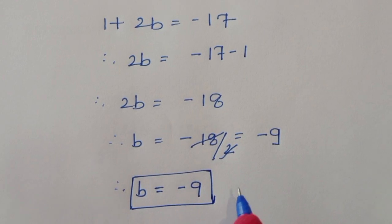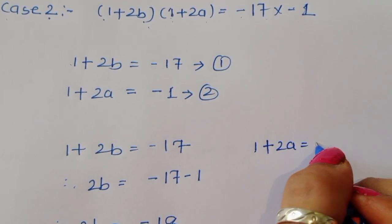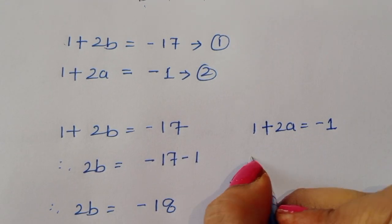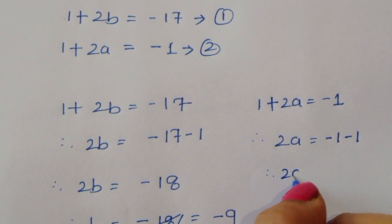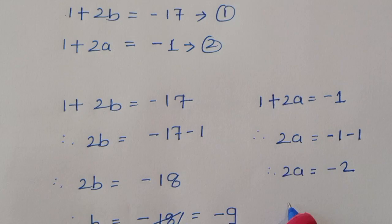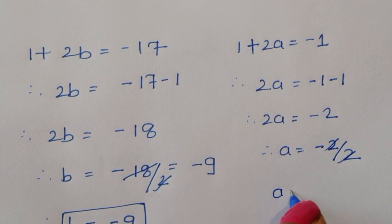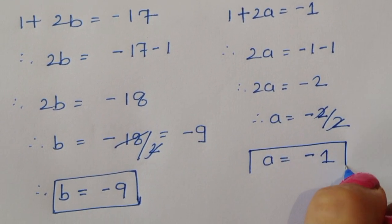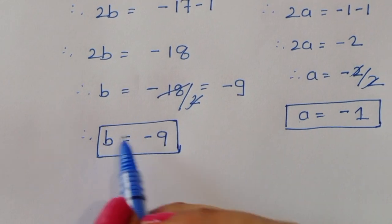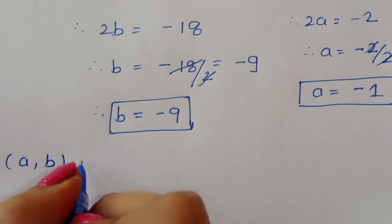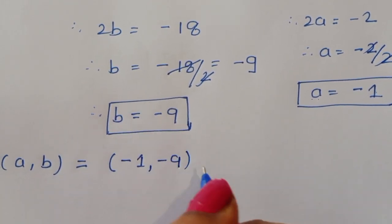From equation 2 in Case 2: 1 plus 2a equals minus 1, so 2a equals minus 2, therefore a equals minus 1. From Case 2, we get a equals minus 1 and b equals minus 9.